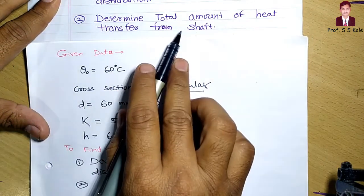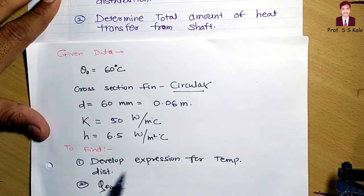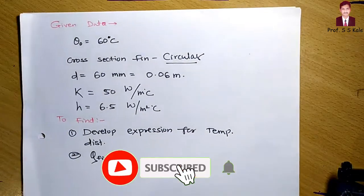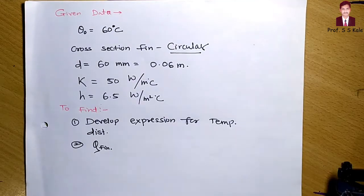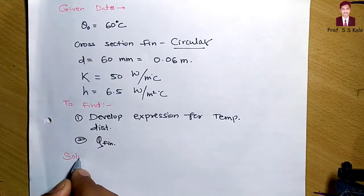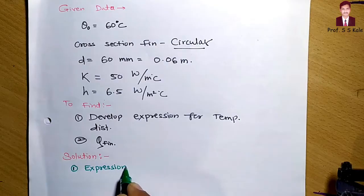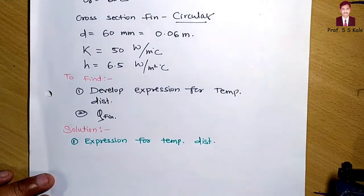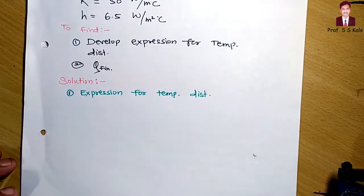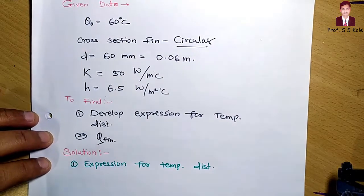The two unknowns to determine are the temperature distribution expression and the heat transfer Q_fin. Let's proceed to the solution. For the temperature distribution, we need to use the temperature distribution equation. First, we identify which fin case applies.